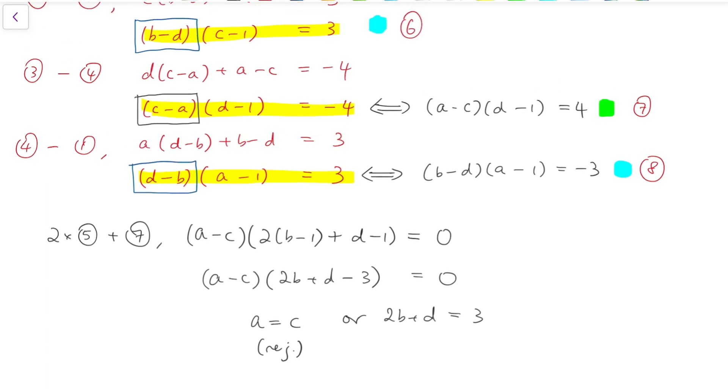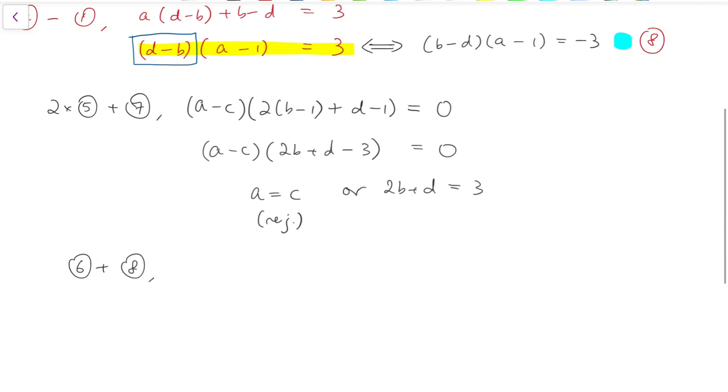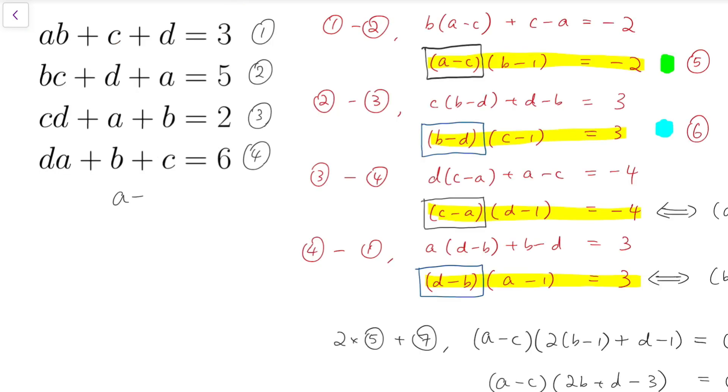I'll do similar things on equations 6 and 8. And this time we only have to add them up to make right hand side equal to 0. We have b minus d as the common factor. And adding things inside the bracket, we have a plus c minus 2 and the product equals 0. So that means either b equals d or a plus c equals 2. Again, using a similar argument, we can say that b cannot be equal to d. So I have to reject this as well. So now we can add two more equations into this system, which is a plus c equals 2 and 2b plus d equals 3.